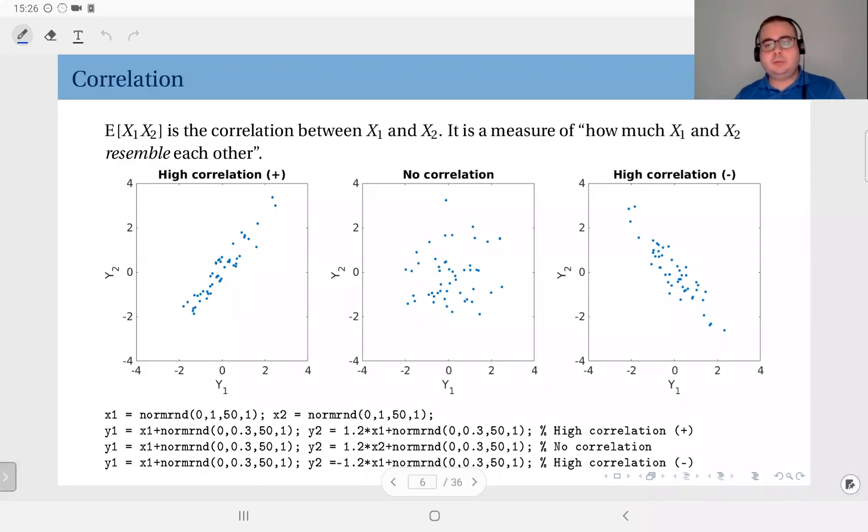When you set j equals 1 and k equals 1 in the definition of joint moments, you get what we call correlation, the expected value of the product of X1 and X2.